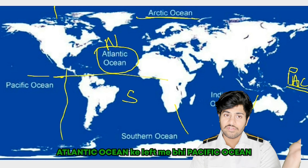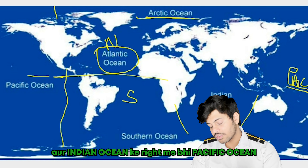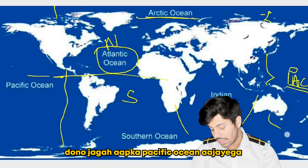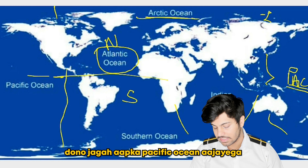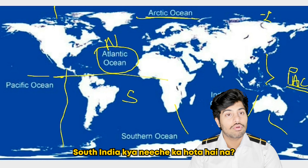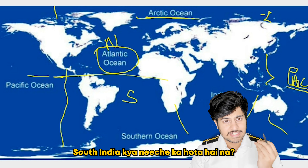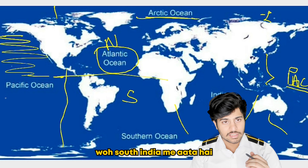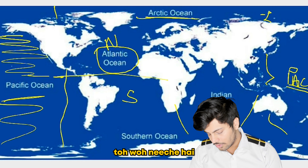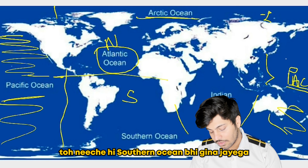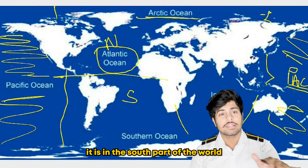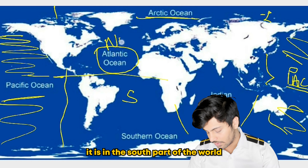Atlantic Ocean is also Pacific on both sides, and Indian Ocean is also Pacific on both sides. In both places you will have Pacific Ocean. Southern Ocean — South India, what is this? It is the South Pole. Like Chennai, it is in South India, so it will go down. So the Southern Ocean will also begin. We need to remember Southern Ocean as it is in the South part of the world.